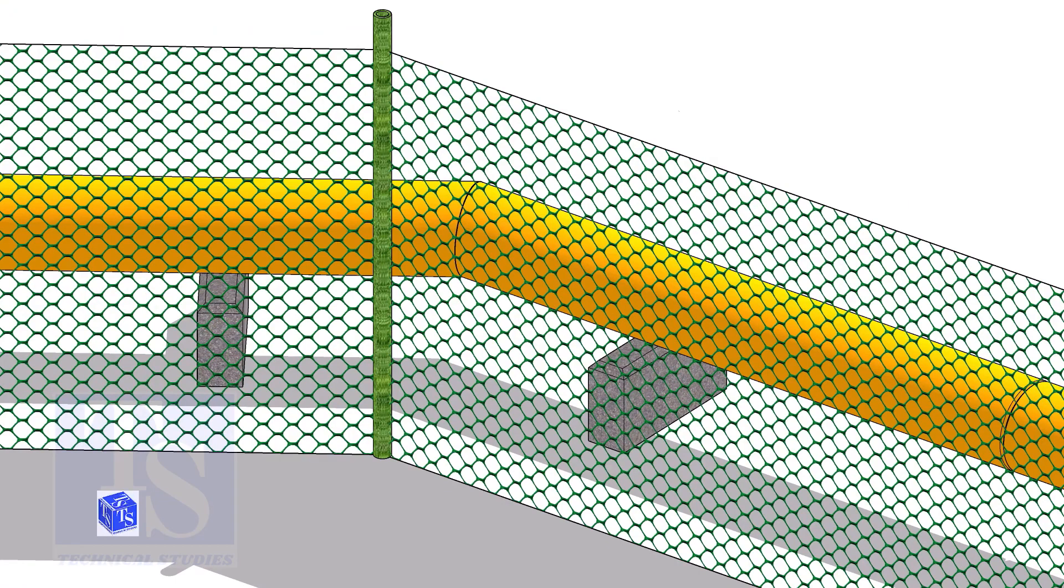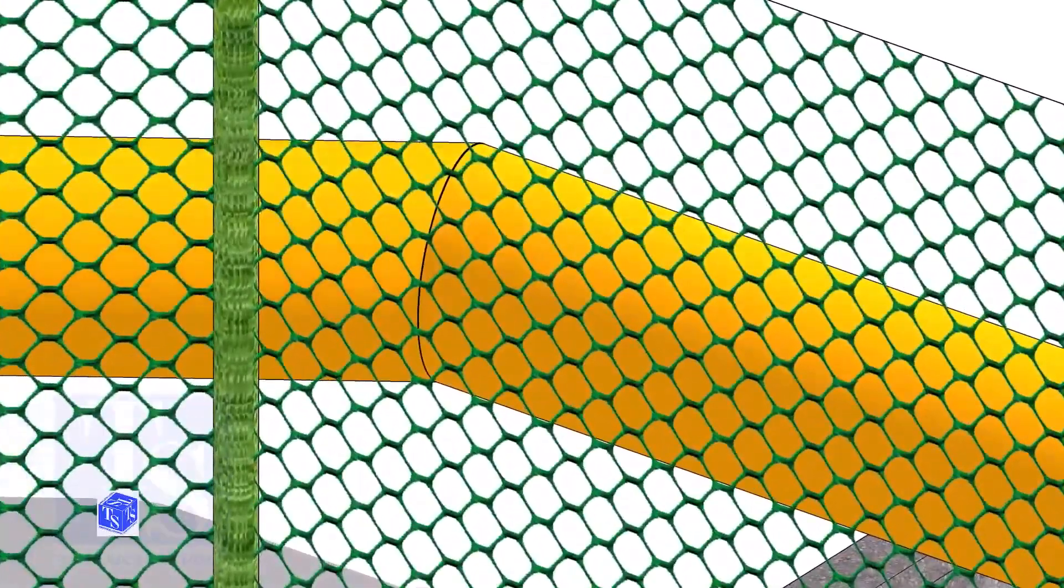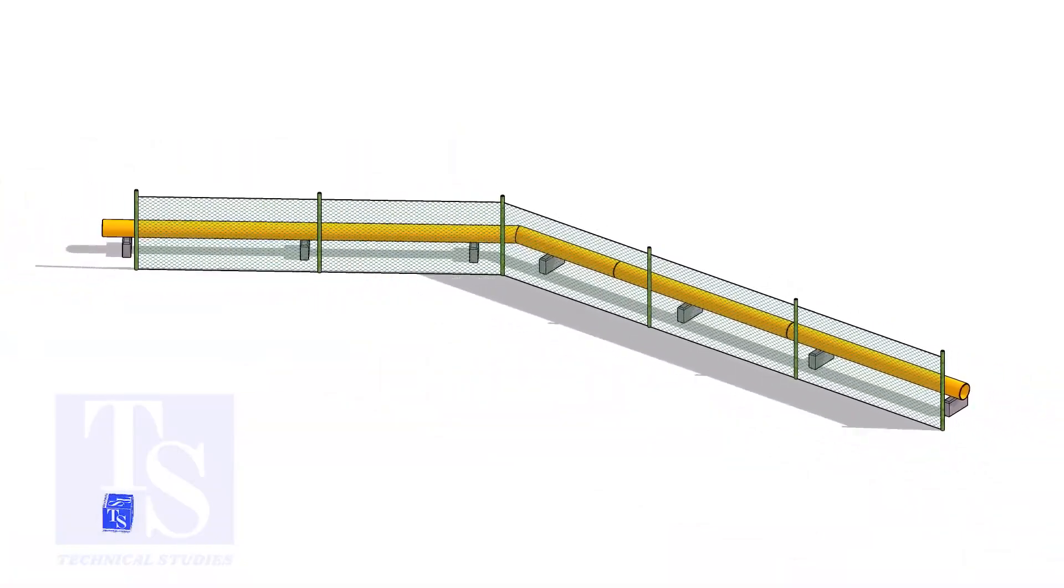But he has a problem. The fencing has several turns. He wants to know how to make miter cuts on the spot. He asked me how to find the miter cutback easily.